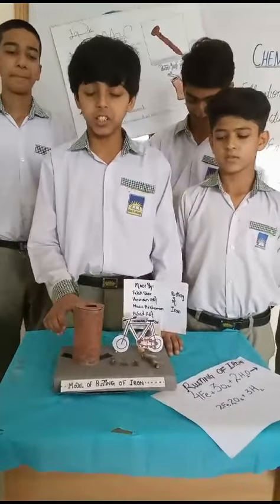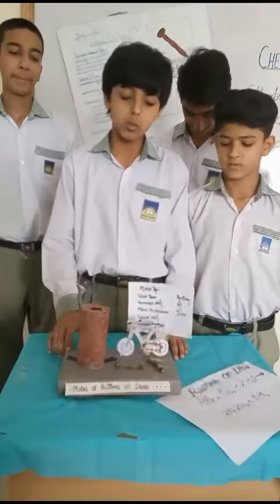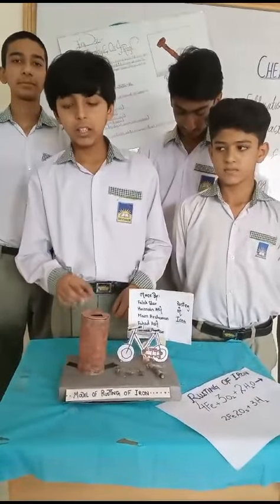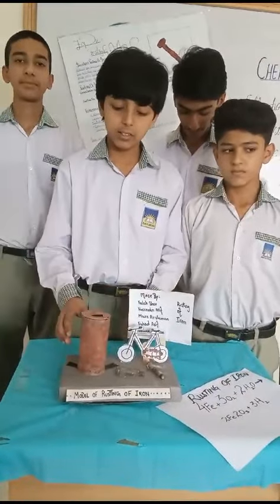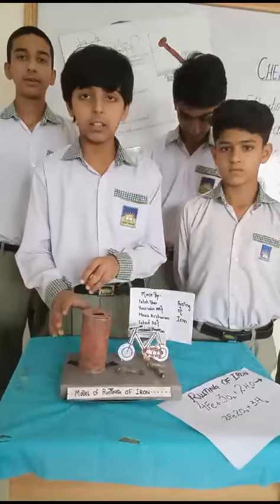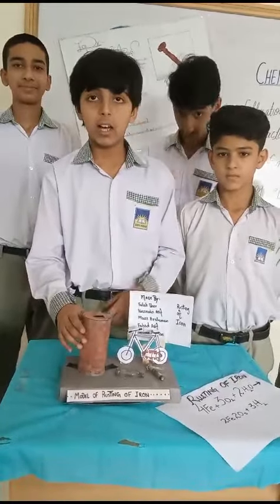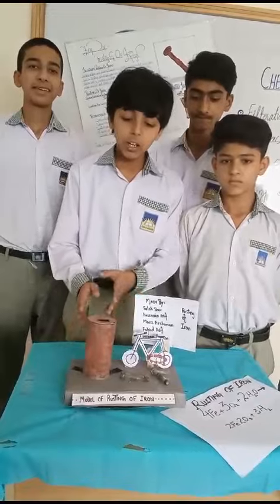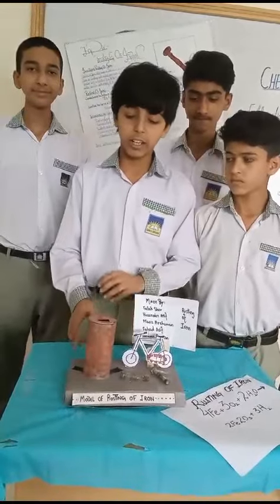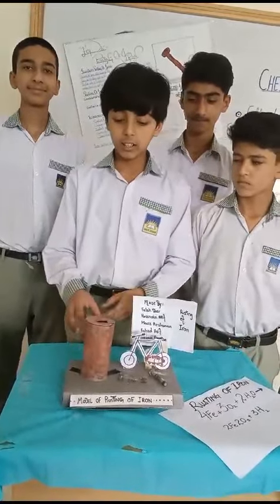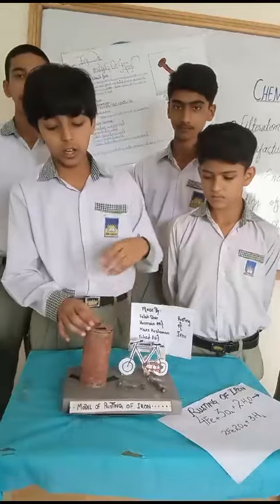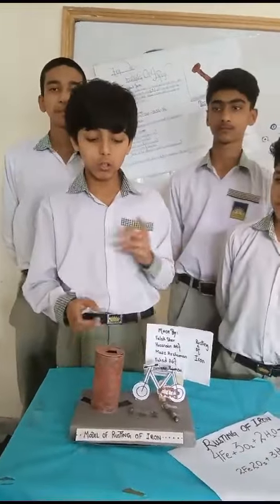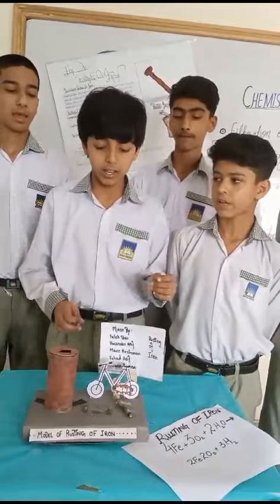A big example is the rusty can. Here you can see how we created this 3D model with its rusty effects. It was a metal can but it came into contact with oxygen and moisture, so it produced a reddish-brown substance called rust. We can also call rust Iron Oxide.